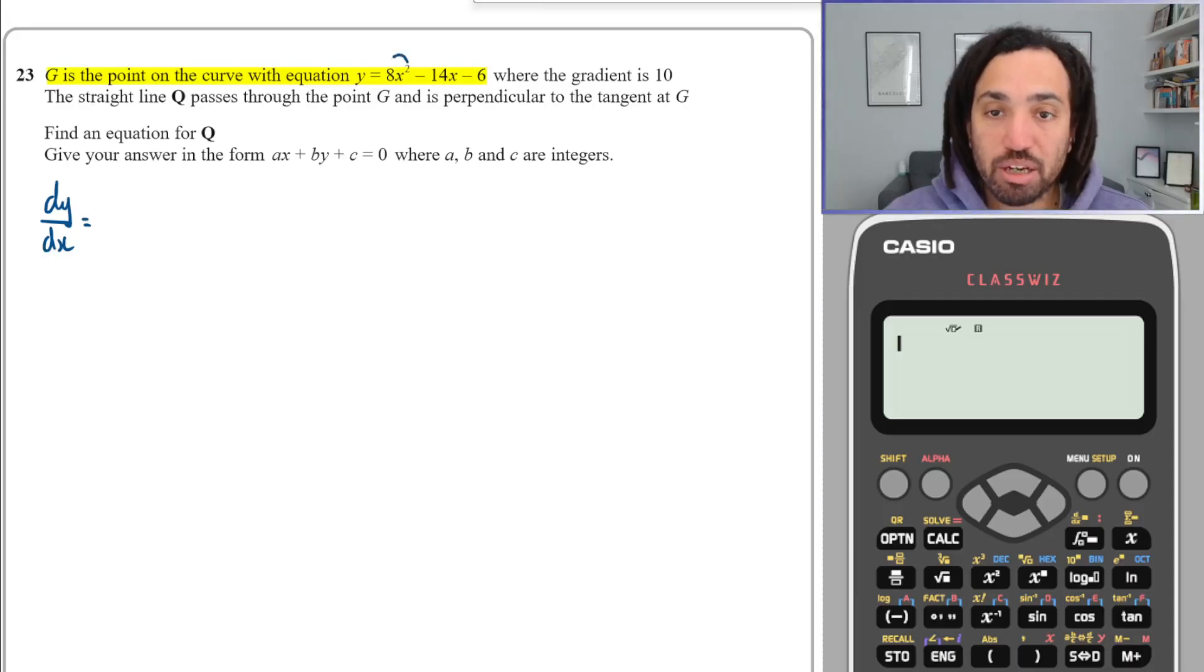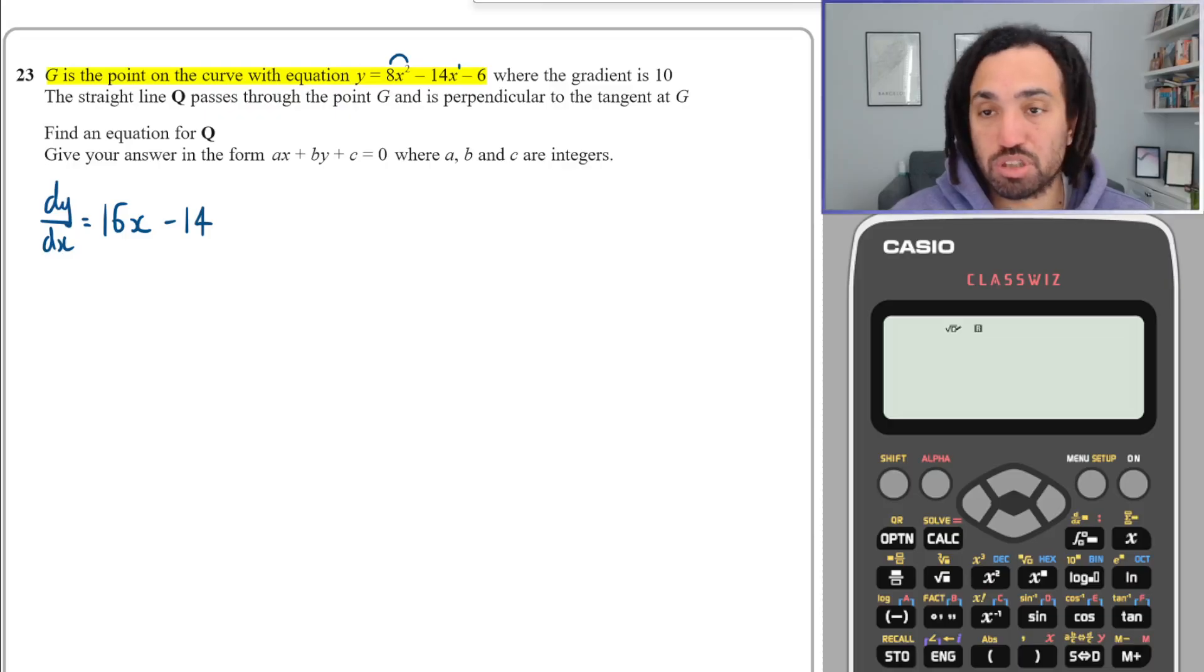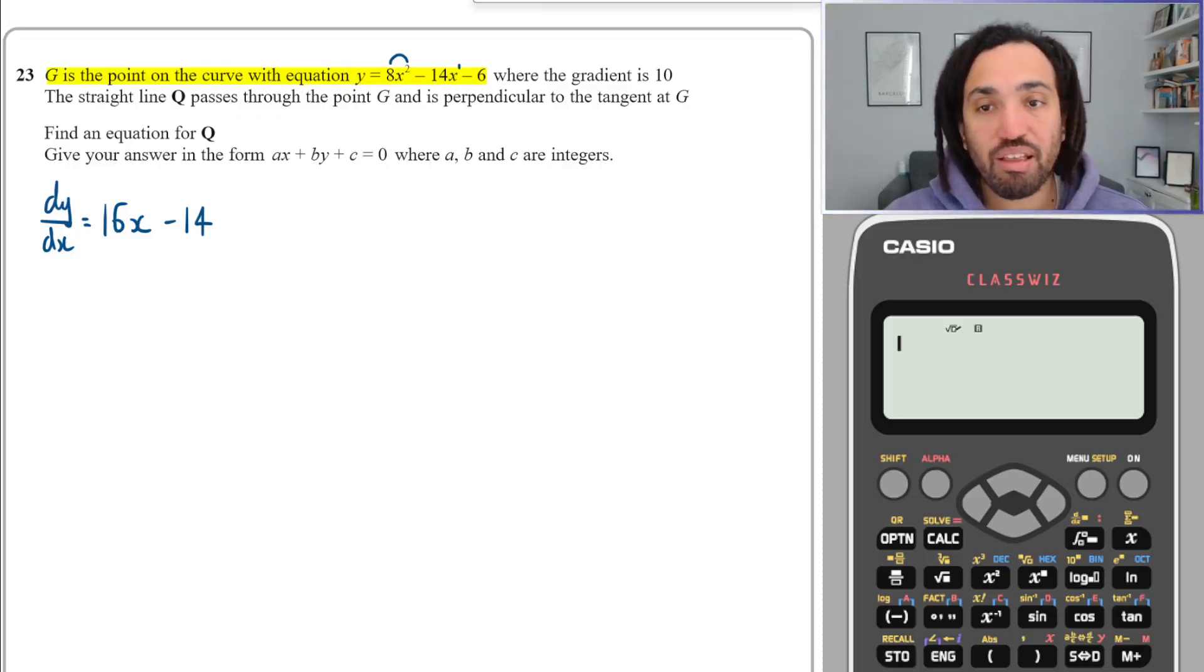The power comes down times by the coefficient, so 2 times 8 is 16, and then we drop the power down by 1 to x¹, which is just x. Here the power is 1, that multiplies by -14 to get -14. Drop the power down gives you x⁰. x⁰ is just 1, so what's the point writing it? And any constant differentiates to 0.